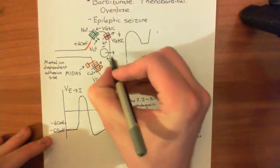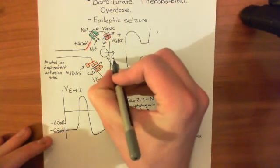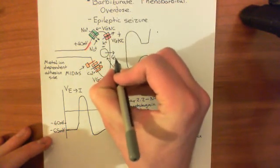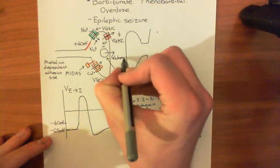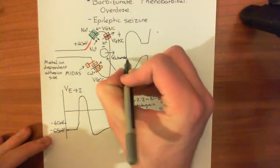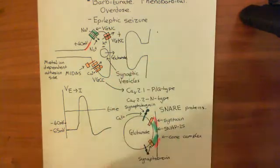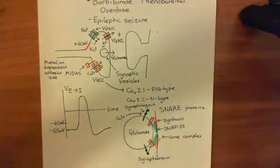So glutamate is now in the synaptic cleft. In the next video, we will go from there.